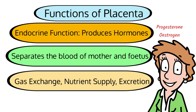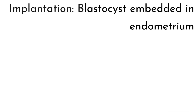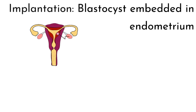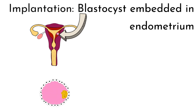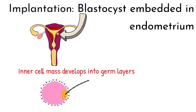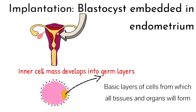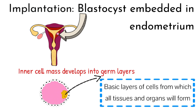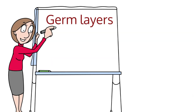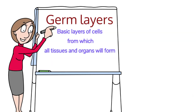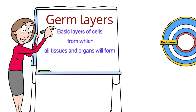Now you have some idea about how the blastocyst became embedded in the endometrium via those trophoblast cells breaking down its lining. So what happens to the inner cell mass? It develops into germ layers — basic layers of cells from which all tissues and organs will form. There are three germ layers, and remember they are the basic layers of cells from which all tissues and organs will form.